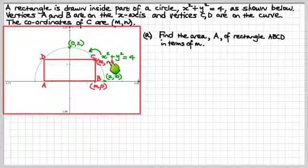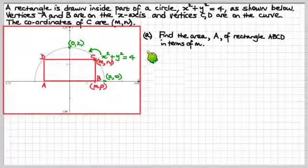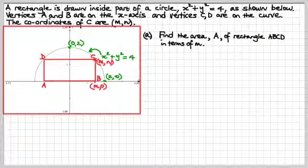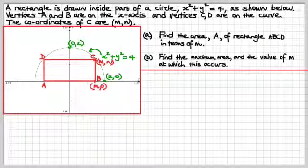We have to find the area A of rectangle ABCD in terms of m, that's the first thing we have to do. And secondly, we have to find the maximum area and the value of m at which this maximum area occurs.